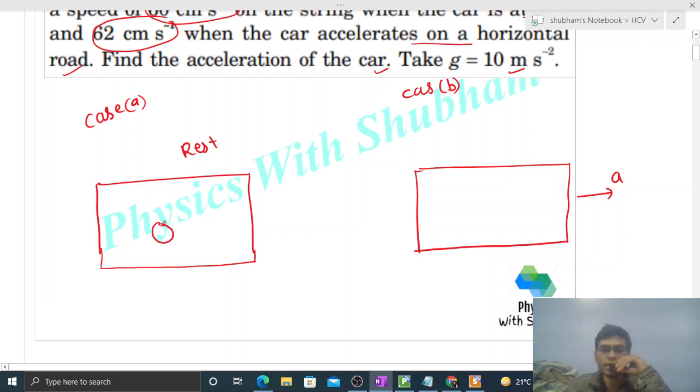Now in this car we have a ball and this ball is attached to the ceiling of the car with the help of a light string. And in this string, the speed of transverse wave is given 60 centimeter per second in case A and in case B it is given 62 centimeter per second.